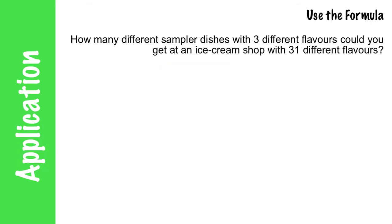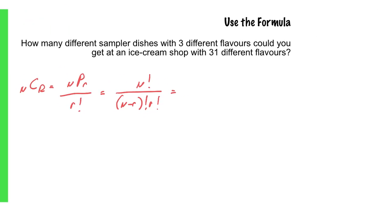So now let's use the formula. So the formula is NCR, which translates into the perm formula over R factorial, which when you write it out completely, becomes what we just derived on the previous slide. So to use it in a case, how many different sampler dishes with three different flavors could you get at an ice cream shop with 31 different flavors? So you have 31 from which to choose from, and you are going to choose three of them. So 31 choose three.